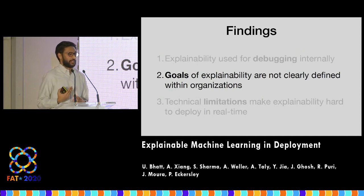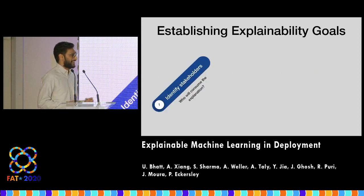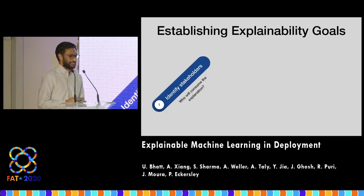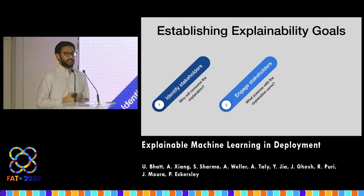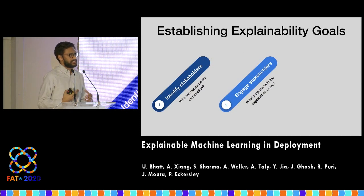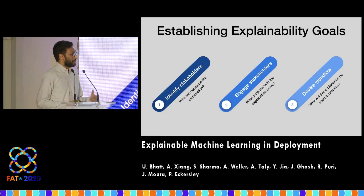Another finding was that the goals of explainability aren't clearly defined within organizations. We attempted to create a framework: first, identify the stakeholder consuming the explanation and whether they even need one. Engage with them to figure out what they really want — do they need to scrutinize training data, or just have guarantees on reliability, which is not necessarily given by an explanation? Then devise a workflow for how the explanation will be used in practice — as a one-off justification, or to interact with the model and make updates to it.